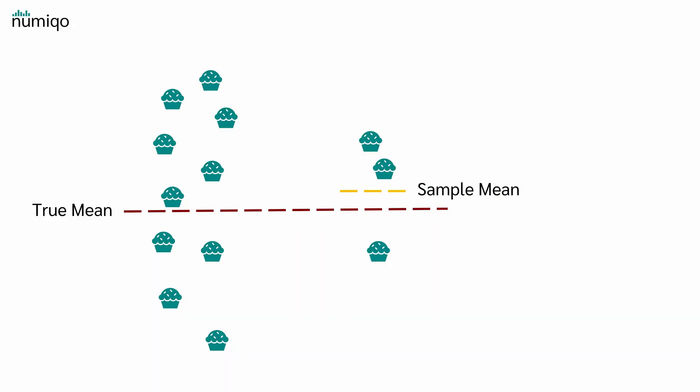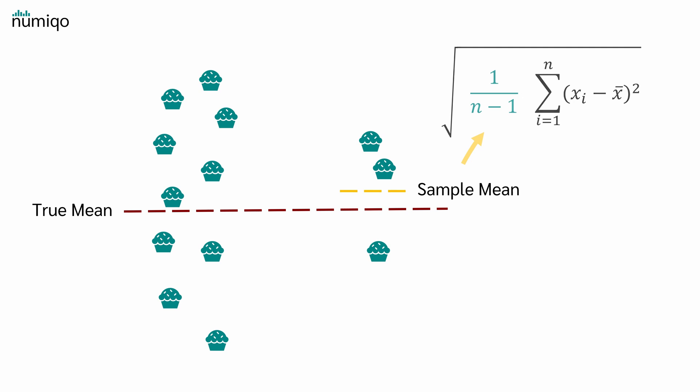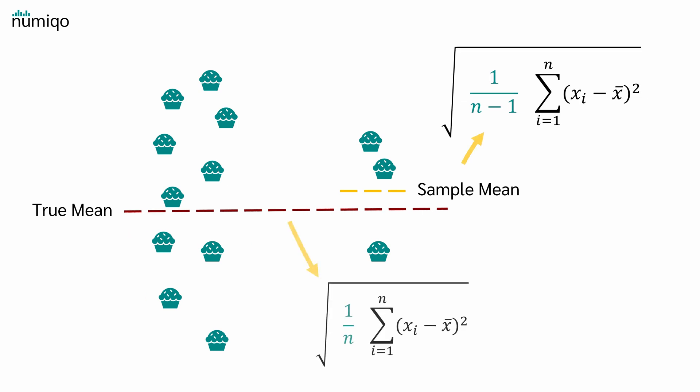Now we can be even more precise about the when. Because we know everything is about the mean: if we use a sample and we estimate the mean with that sample, we use the formula with n-1. If we use a sample but we know the true mean, we use the formula with 1 divided by n. And of course, if we know the whole population, we also use the formula with 1 divided by n.